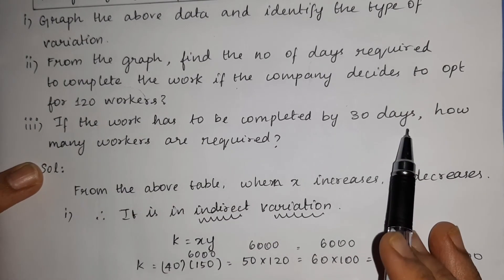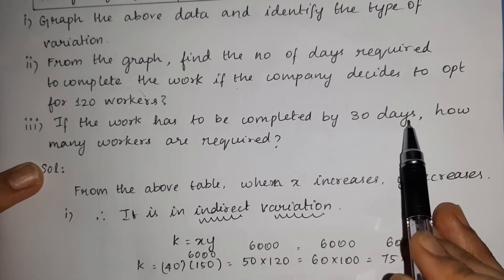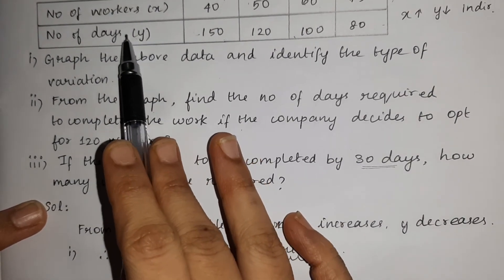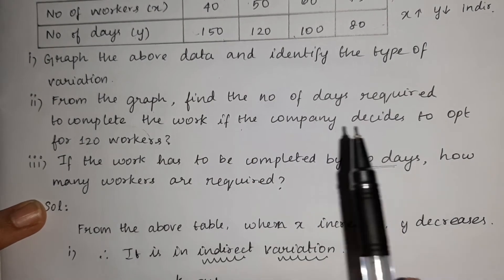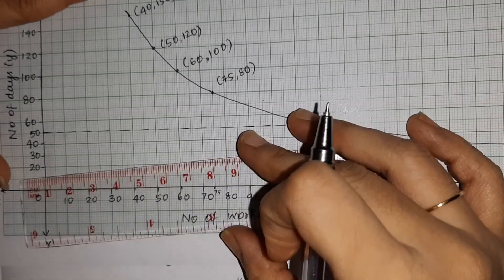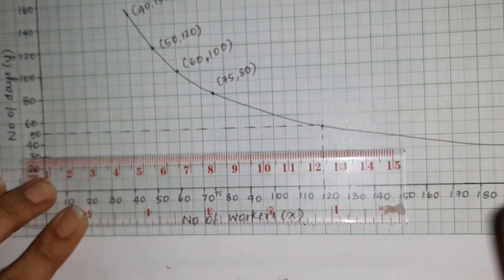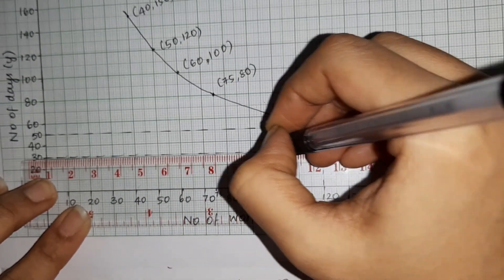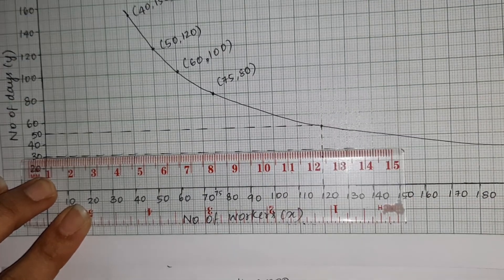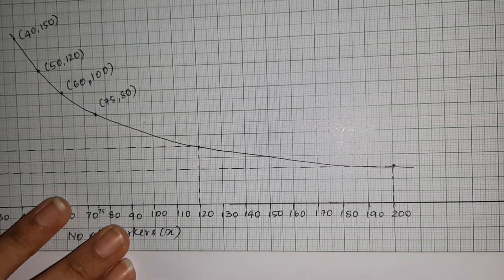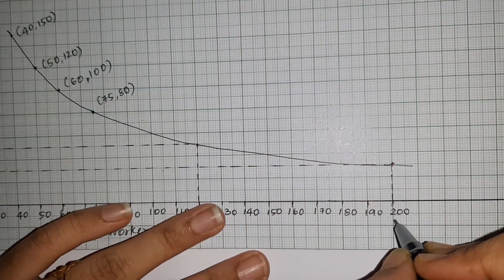Third question: if the work has to be completed in 30 days, how many workers are required? The number of days is the y value. On the y-axis, locate 30 — which is between 20 and 40. Draw a dotted line from y = 30 to the curve (rectangle hyperbola), then extend down to the x-axis. The corresponding x value is 200.